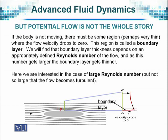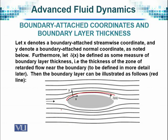In this boundary layer region, shown here as a magnified picture from A to A-dash, you can see how the velocity varies. On the solid boundary, the velocity drops to almost zero. But as we go away from it, the velocity behaves as if there is no solid body present. As we reach the outer edge, the velocity becomes close to the free-stream value. The thickness of the boundary layer, normally denoted as delta-x, is shown within the red line.